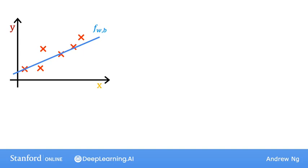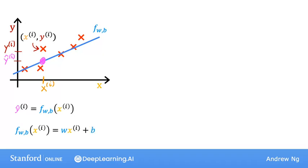And just to remind you of some notation, a training example like this point here is defined by x superscript i, y superscript i, where y is the target. For a given input x_i, the function f also makes a predictive value for y. And the value that it predicts for y is y hat i, shown here. For our choice of a model, f of x_i is w times x_i plus b. Stated differently, the prediction y hat i is f of w,b of x_i, where for the model we're using, f of x_i is equal to w x_i plus b.